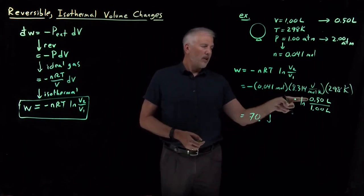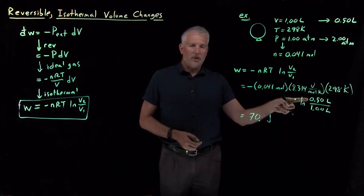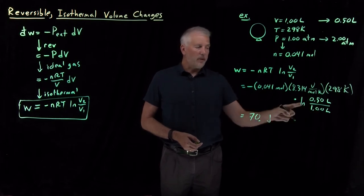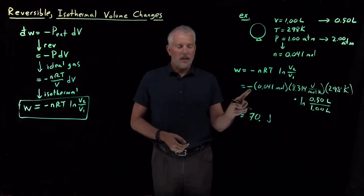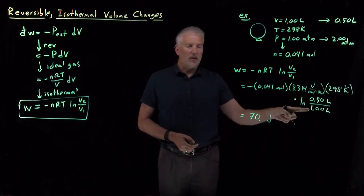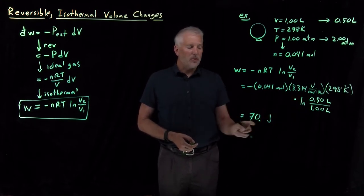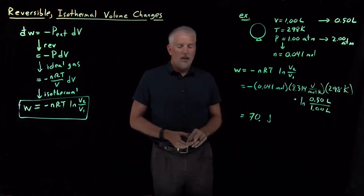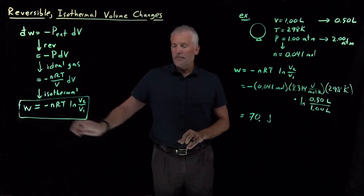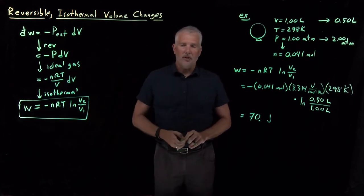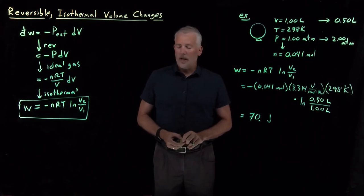Mathematically, that shows up because when the final volume is smaller than the initial volume, the ratio V2/V1 is less than 1. Taking the log of a number less than 1 gives a negative number, and multiplying by the leading negative sign gives a positive result. So any compression where the final volume is smaller than the initial will always lead to a positive value for the work.